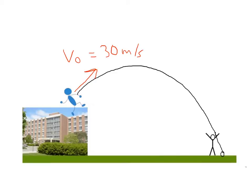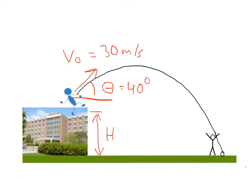The throw is at an angle of 40 degrees with respect to the horizontal, which means there's a component of the velocity in the x direction and a component in the y direction. The ball starts at a height h above the ground, and what we're looking for is the distance — I'll call it Δx — that we are looking for when the ball lands.